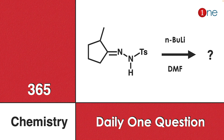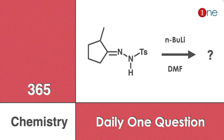Welcome to One Chemistry. This is the 365 Chemistry Series — one daily question for you. Here you have a cyclopentane derivative with a methyl hydrogen side chain with a tosylate group, reacting with n-butyllithium and DMF. You have to guess what the final product will be.